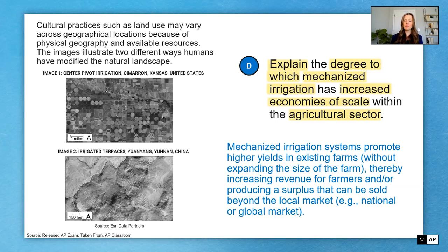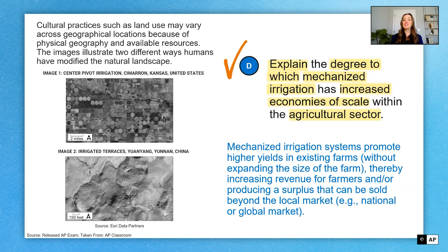Again, you'll notice my answer addresses economies of scale, and it addresses mechanized irrigation as well. If I've done all of that, I've talked about the degree to which, I've included each piece, it's an explain that has a how or a why, and it's at least three to five sentences, I can feel highly confident that I've done what I needed to do for part D, and I'm ready to move on.